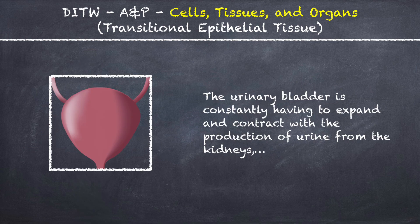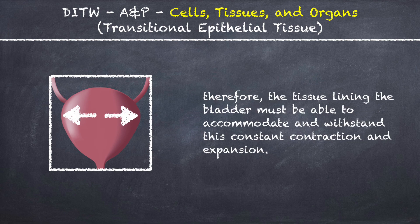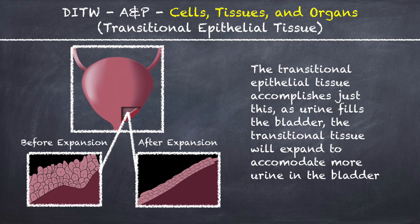The urinary bladder is constantly having to expand and contract with the production of urine from the kidneys. Therefore, the tissue lining the bladder must be able to accommodate and withstand this constant contraction and expansion. The Transitional Epithelial Tissue accomplishes just this.